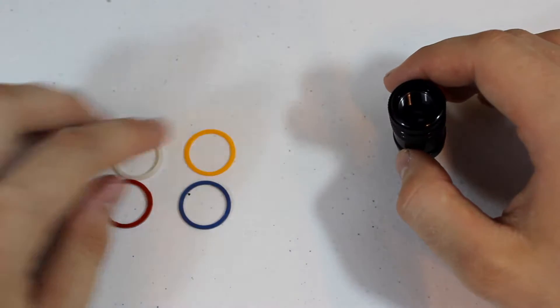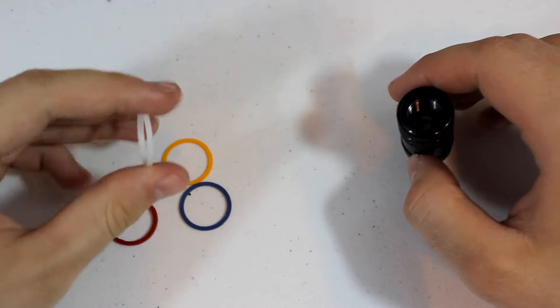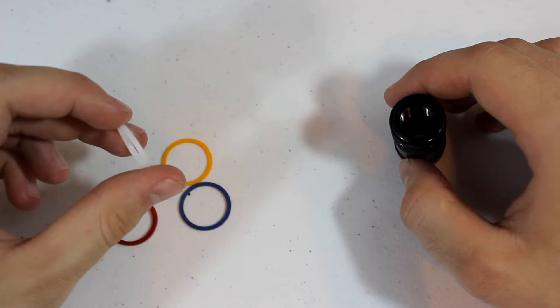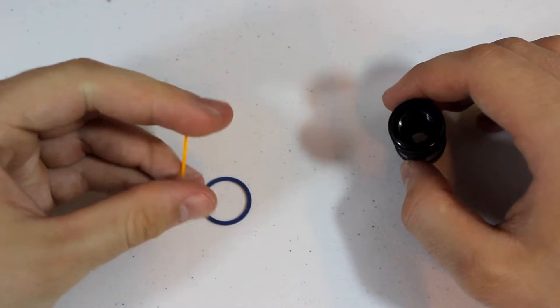It comes with four different rings depending on what you want to reduce your FPS by. The white ring here is your thickest ring and reduces your FPS by the most, and the yellow ring reduces your FPS by the least.